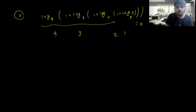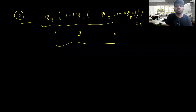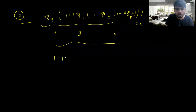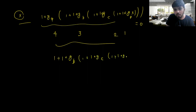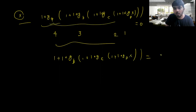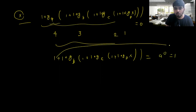We are given this equation and asked which value of x will satisfy it. If I solve it, we have a power of 0. A quantity raised to power 0 will be equal to 1. So this 1 will cancel and we get 0.